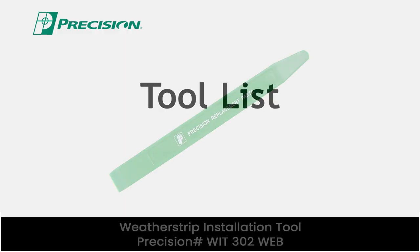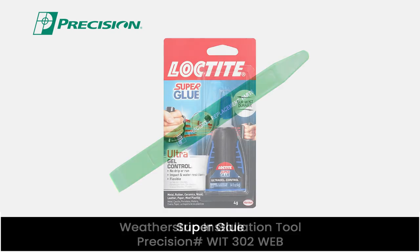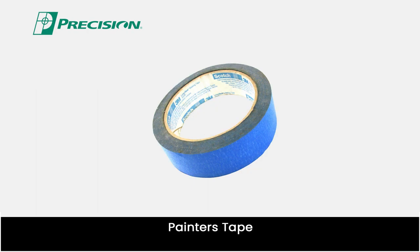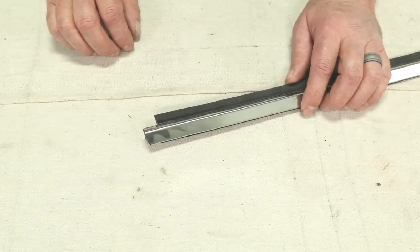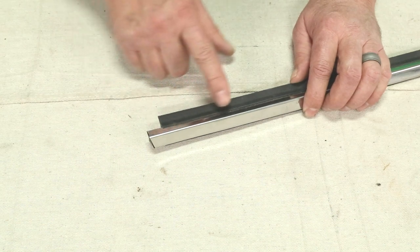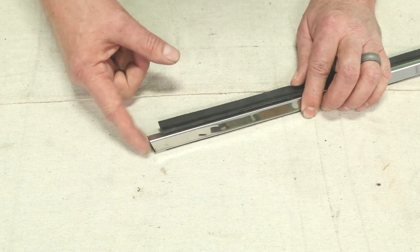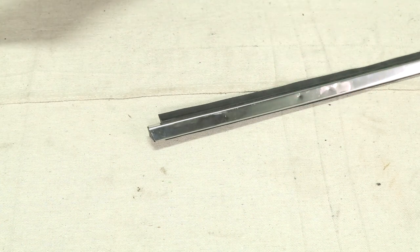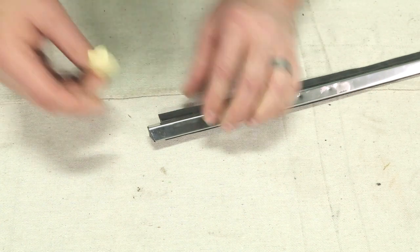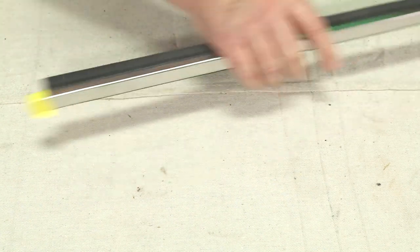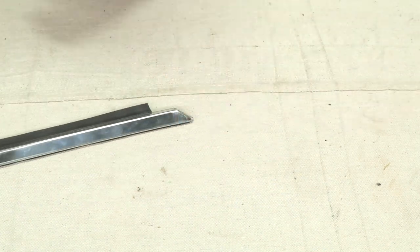Let's get started. These are the tools you need for this project. Now before we start removing any parts, since the rubber weatherstrip does not run all the way to the end of the chrome portion, we're going to mark where the end is, just so we have a reference point. And we're going to do this on both ends.